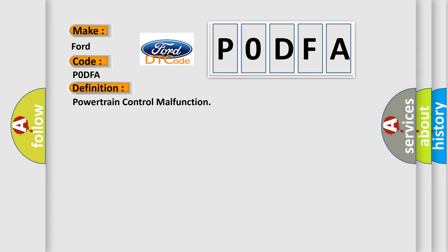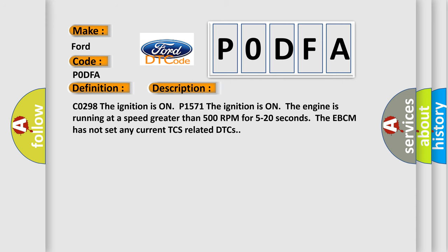And now this is a short description of this DTC code. C0298: The ignition is on. P1571: The ignition is on, the engine is running at a speed greater than 500 RPM for 5 to 20 seconds. The EBCM has not set any current TCS related DTCs.